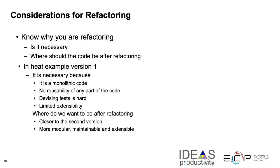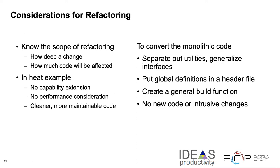To answer where we want to be after refactoring, we want to be closer to the second version, which is more modular, more maintainable, and extensible. To know the scope of refactoring, we have to think about how deep a change we are interested in and how much code is going to be affected. Pre-planning and understanding this ahead of time are important to keep the cost under control and to do the refactoring in a timely fashion.